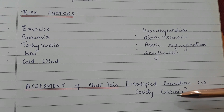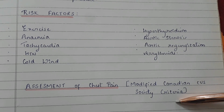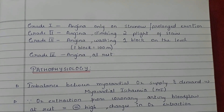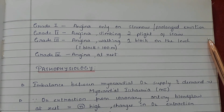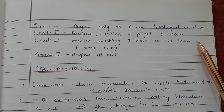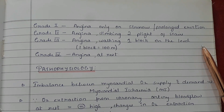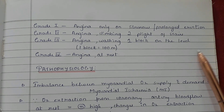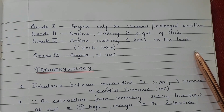Assessment of chest pain according to the modified Canadian CVS Society criteria: Grade 1 is angina only on strenuous or prolonged exertion. Grade 2 is angina while climbing two flights of stairs. Grade 3 is angina while walking one block on the level — one block being 100 meters. Grade 4 is angina at rest.